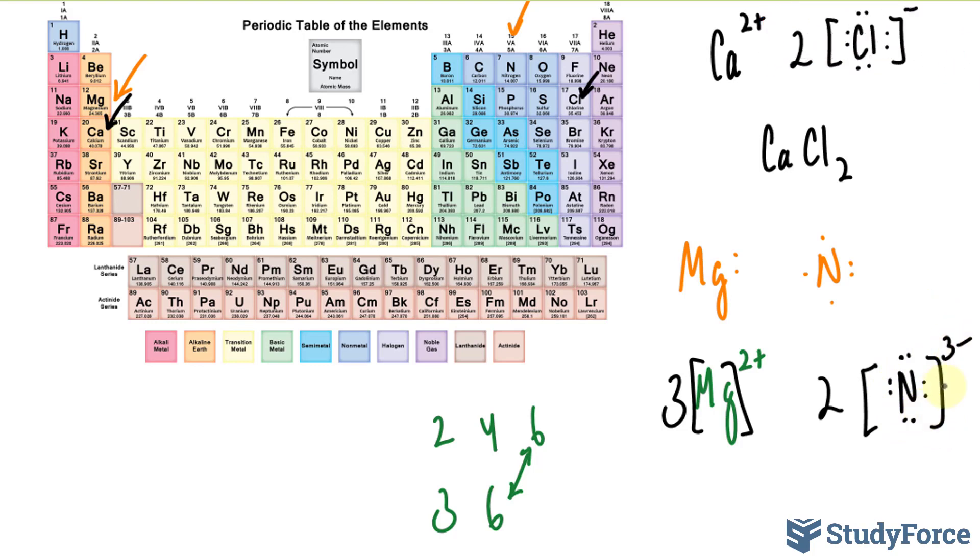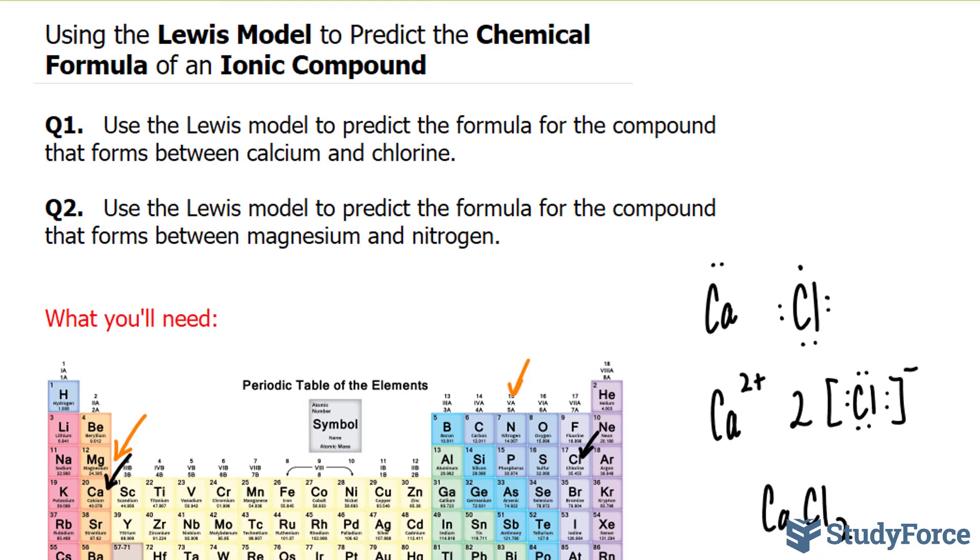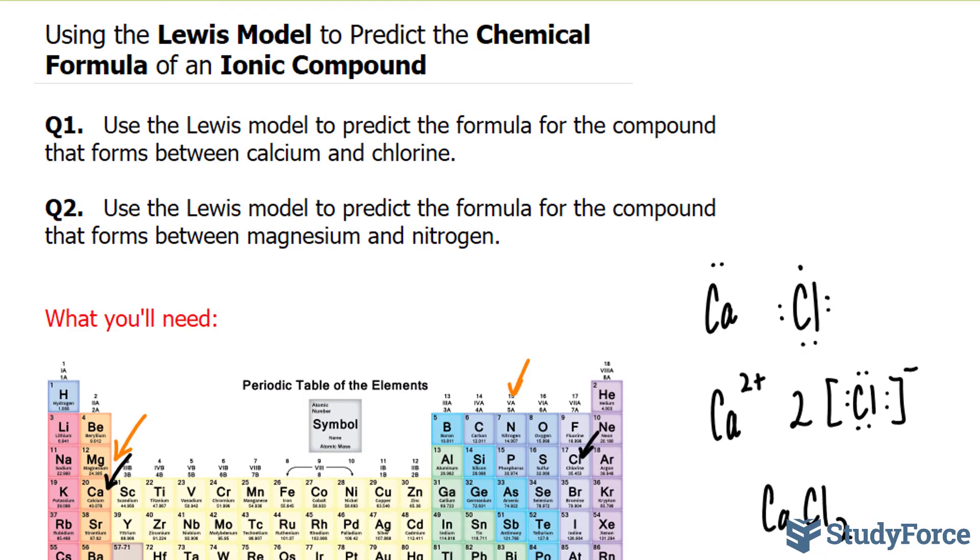Putting this all together, we should have magnesium three, nitrogen two. Notice that these correspond to the subscripts. And there you have it, two examples on how to use the Lewis model to predict the chemical formula for an ionic compound.